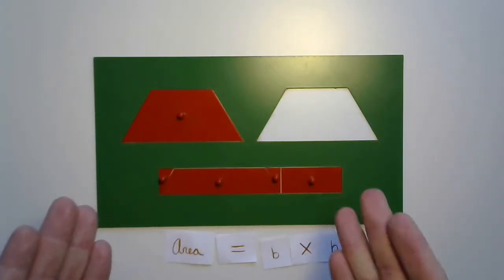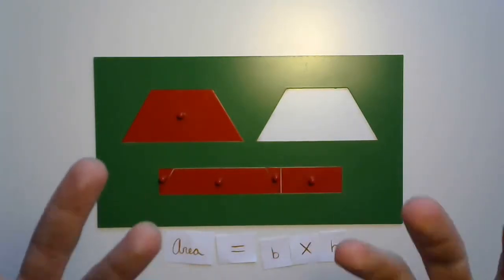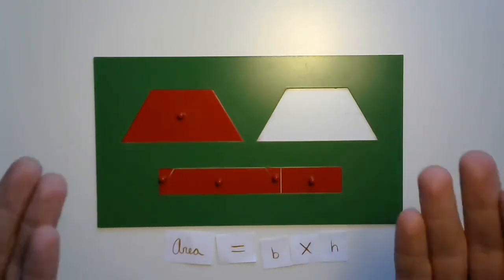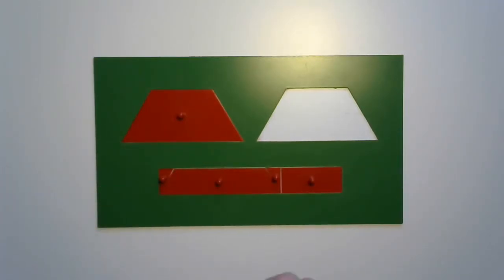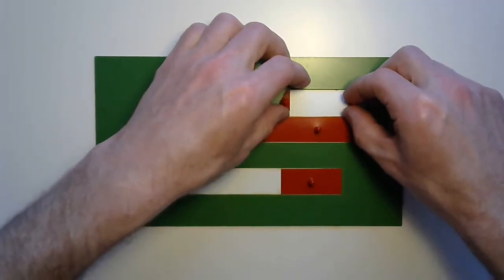But, this wouldn't just work like that. If we use the base and height of this trapezoid, that just wouldn't compute. So, let's go back to that trapezoid and see where each of these parts of the rectangle came from.